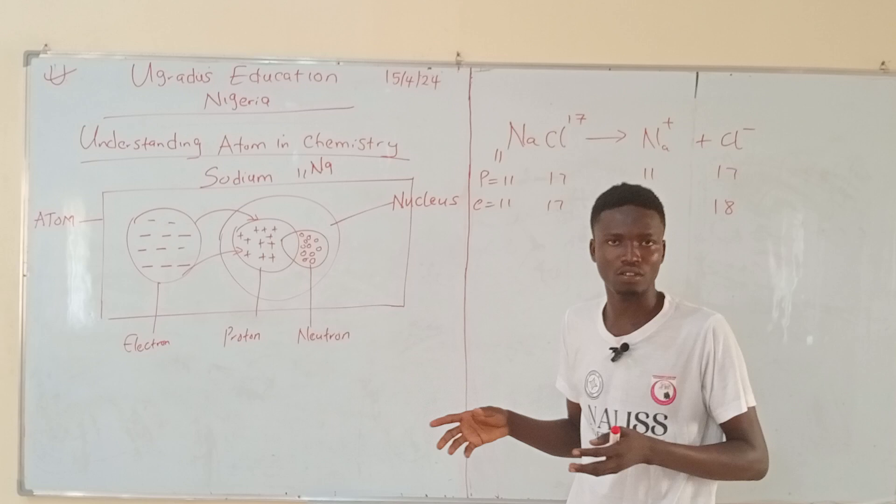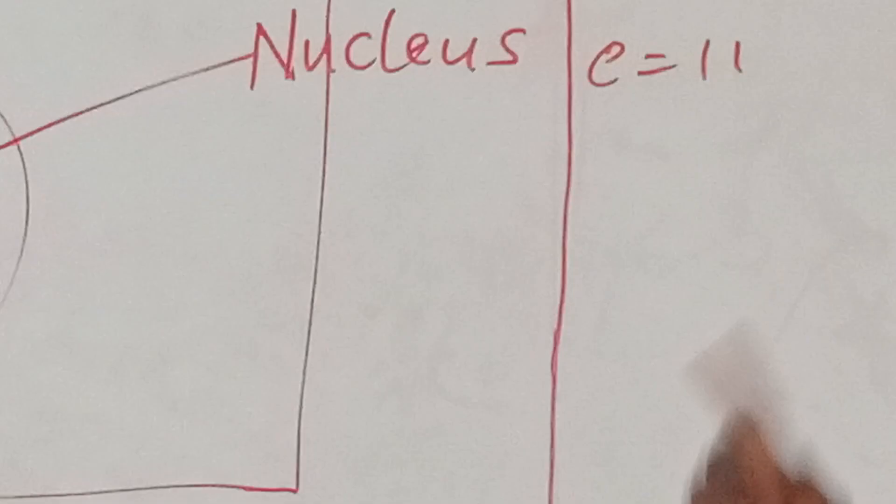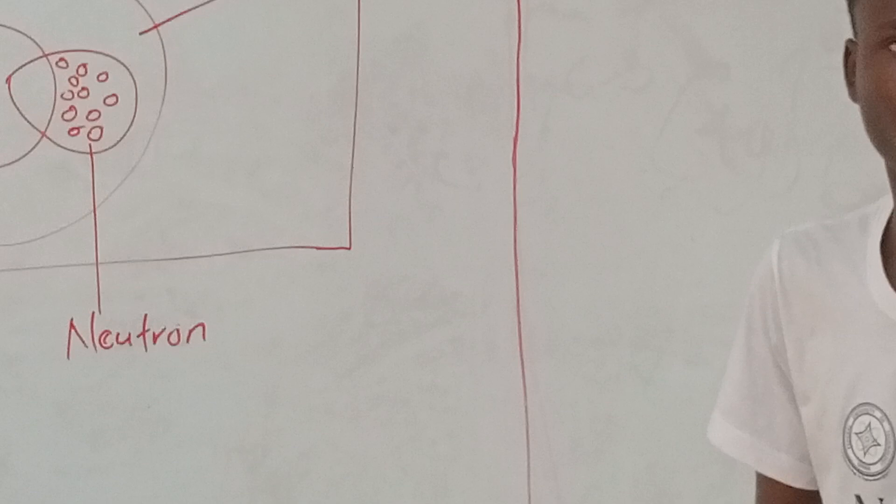That is why there is nothing like protonic or neutron configuration. The concept of electronic configuration is either there is a decrease or an increase in number of electrons, while the number of protons of elements, no matter the condition, remain the same. Now, take a look at this illustration.